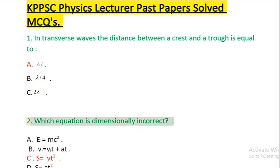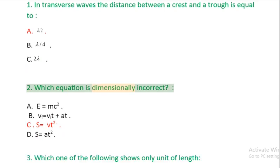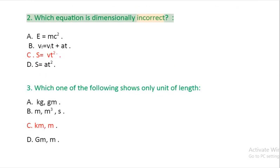Question 2: Which equation is dimensionally incorrect? A: E equals MC squared. B: VF equals VT plus at. C: S equals VT squared. D: S equals at squared.